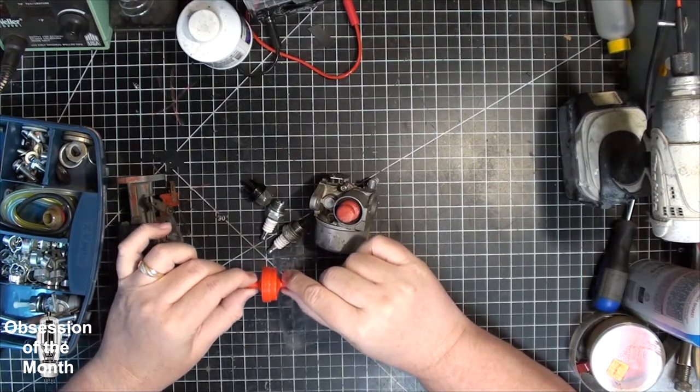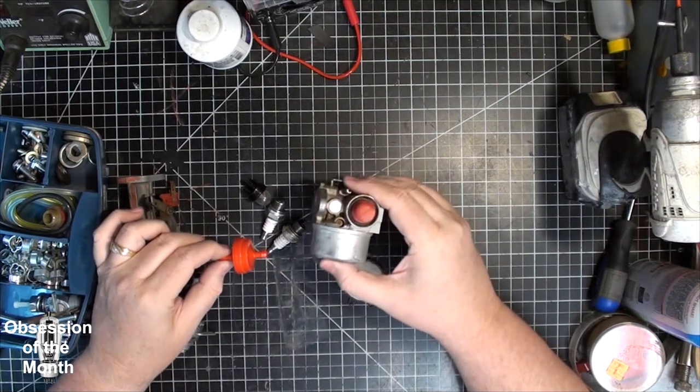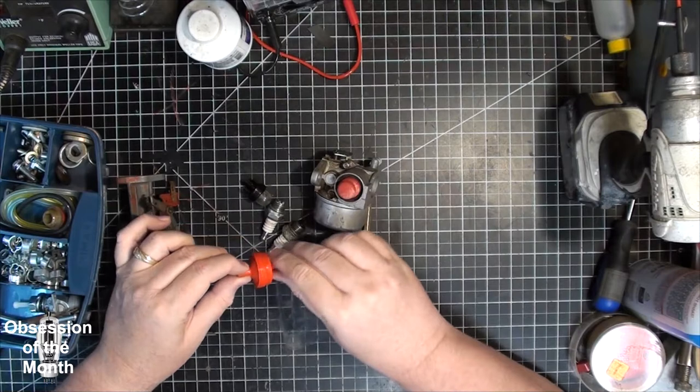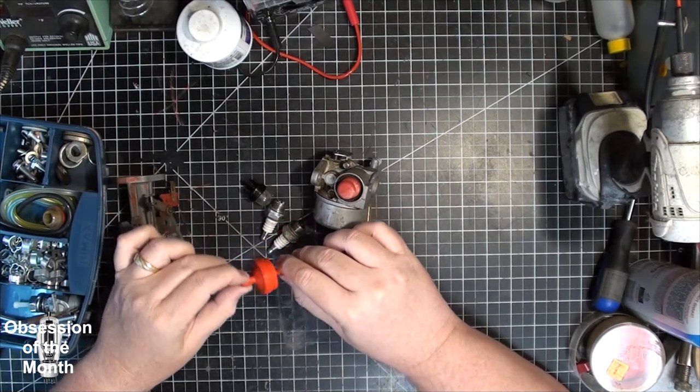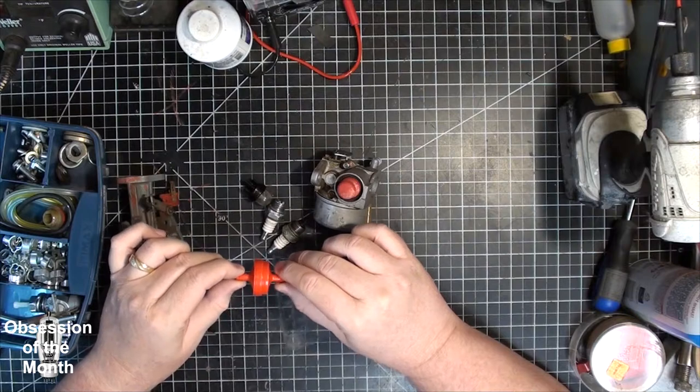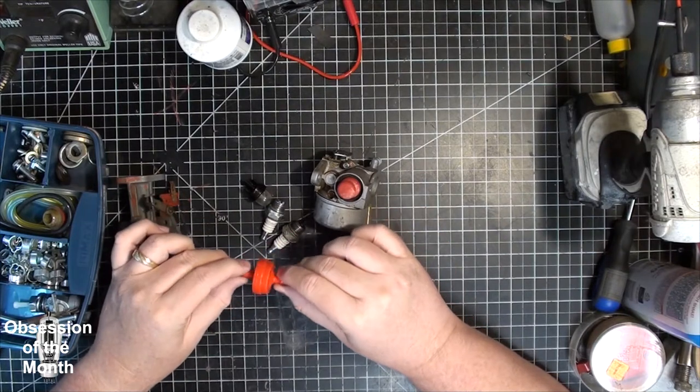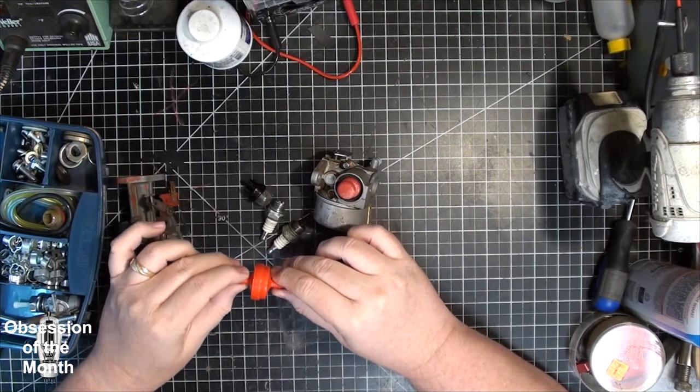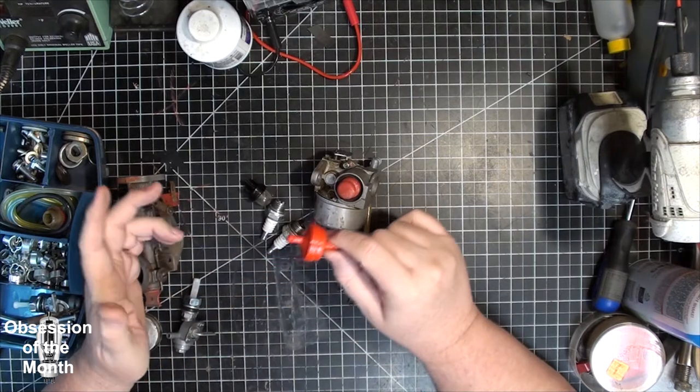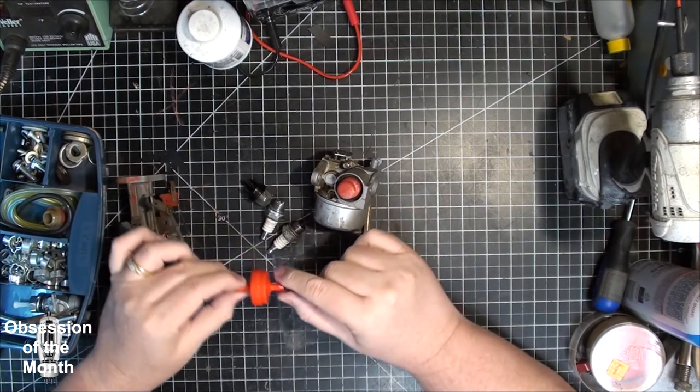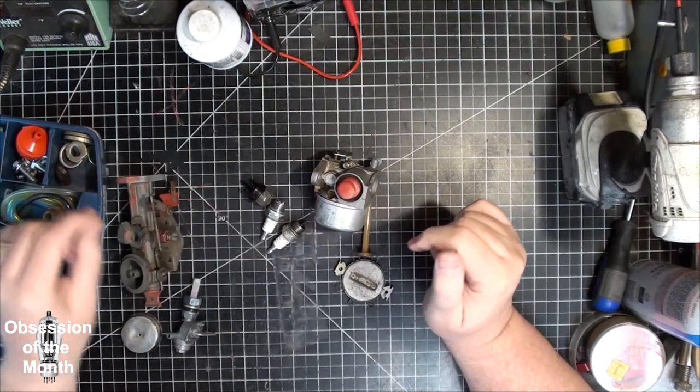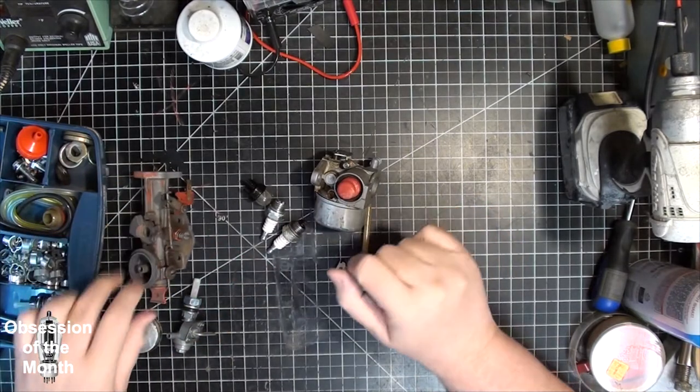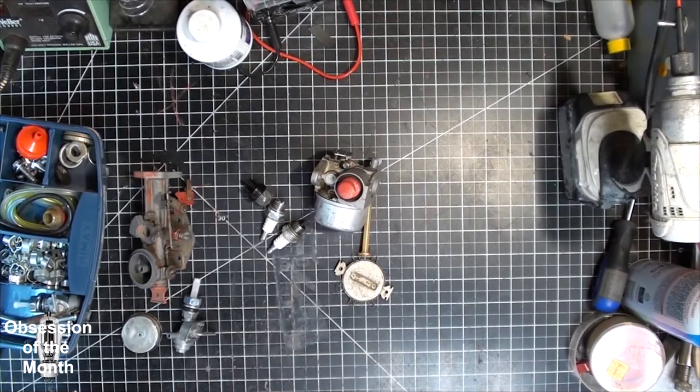This is for something where your gas tank is much higher than your carburetor, so there's a lot of pressure going into this. But if you've got a problem with dirt and rust in your gasoline, besides the fact that you need to clean out your gas tank, you can try using these.